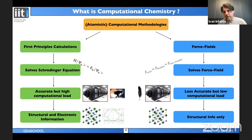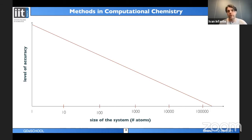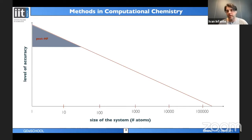Combining electronic information with classical force field information to describe much larger systems is an active area. Looking at the typical accuracy-vs-system-size slide, post-Hartree-Fock methods are very accurate but limited to roughly 10–100 atoms. As you move to larger systems you always lose accuracy.